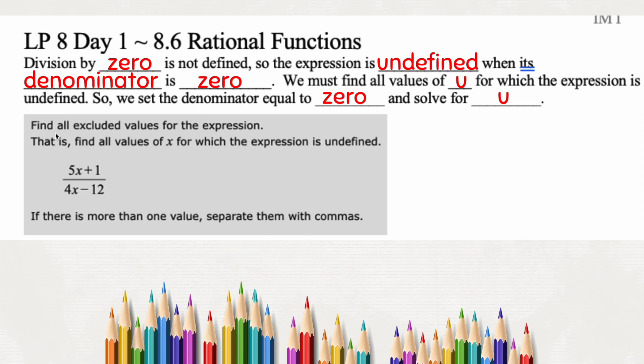It asks us to find all excluded values for the expression. Excluded values are when the denominator equals zero, and that's not allowed. We can't have the denominator equaling zero. If you've been in my class before, I've talked about why we can't divide by zero — I like to use my pizza analogy.